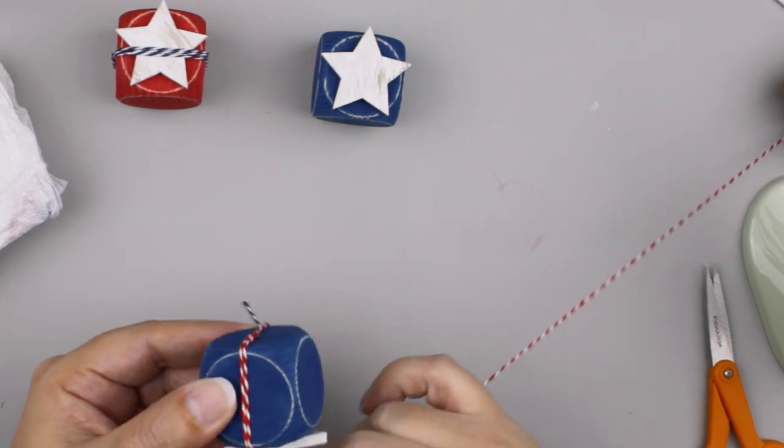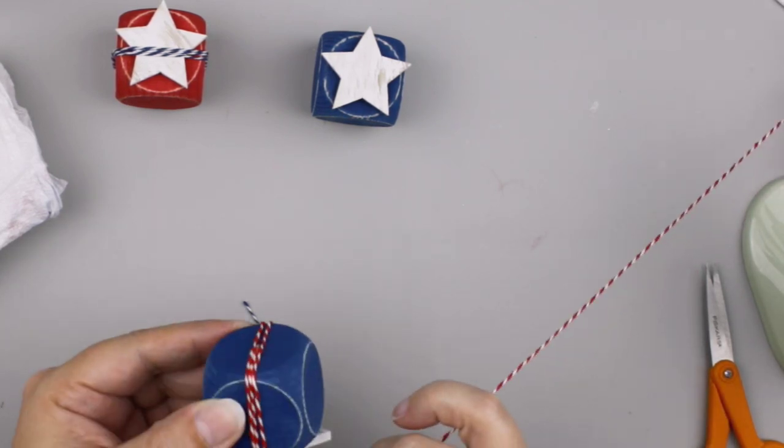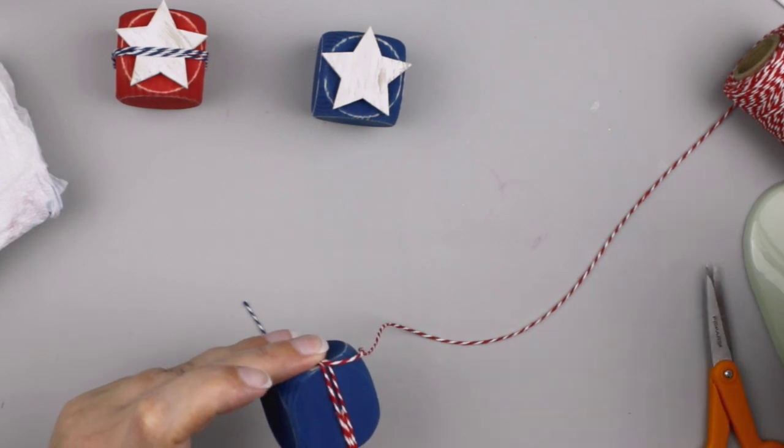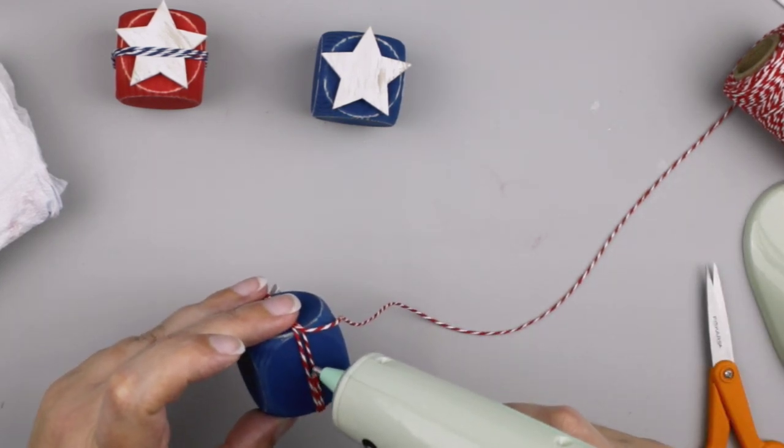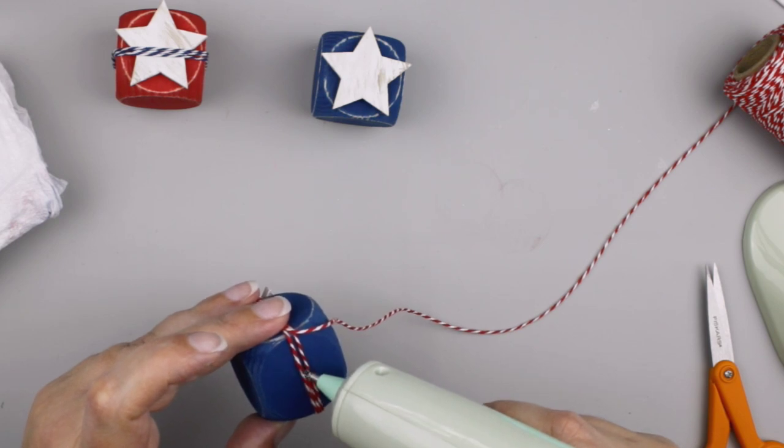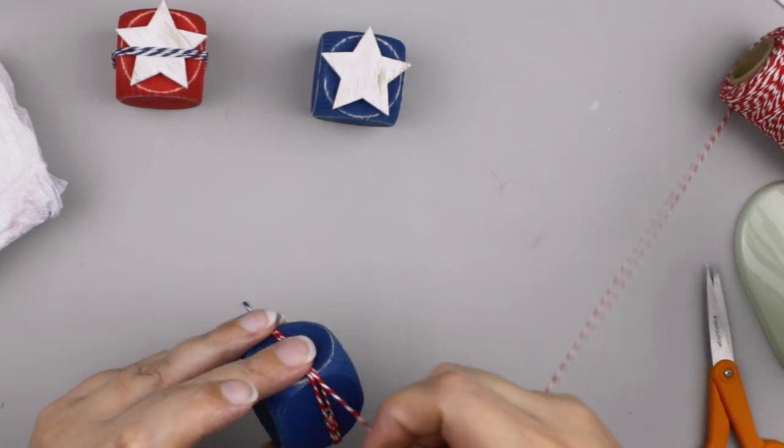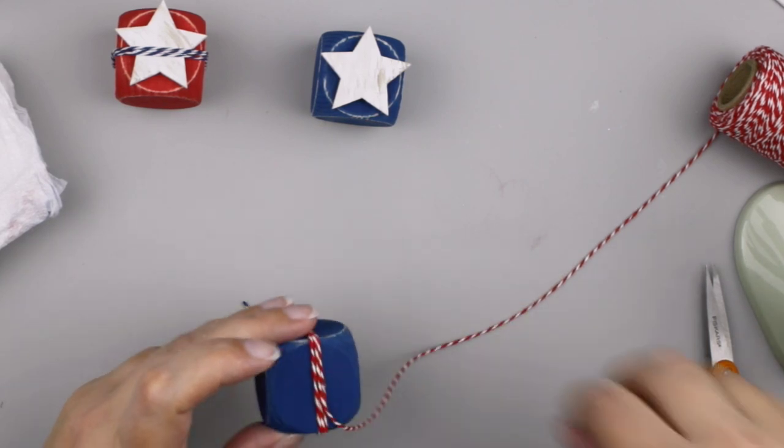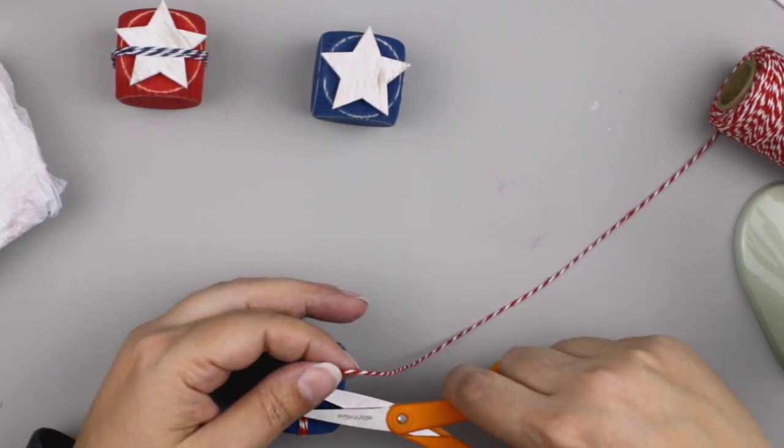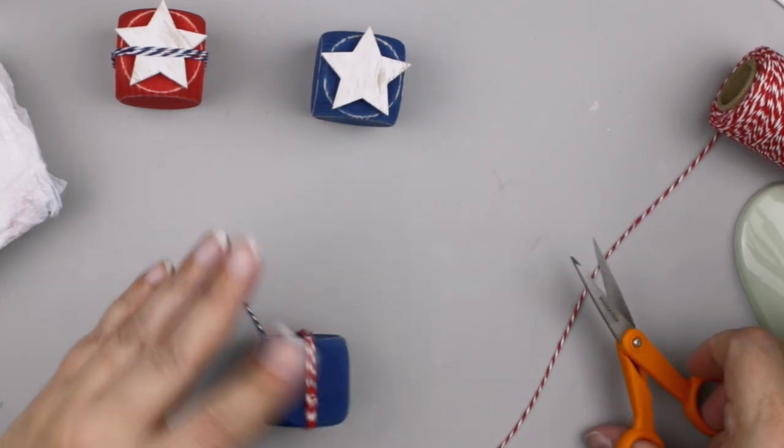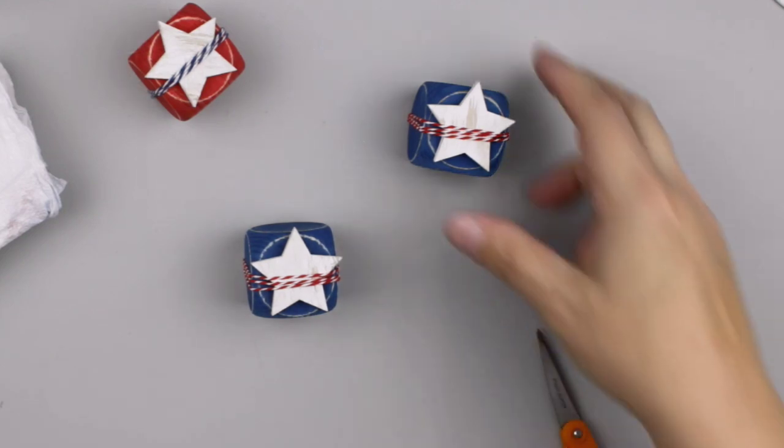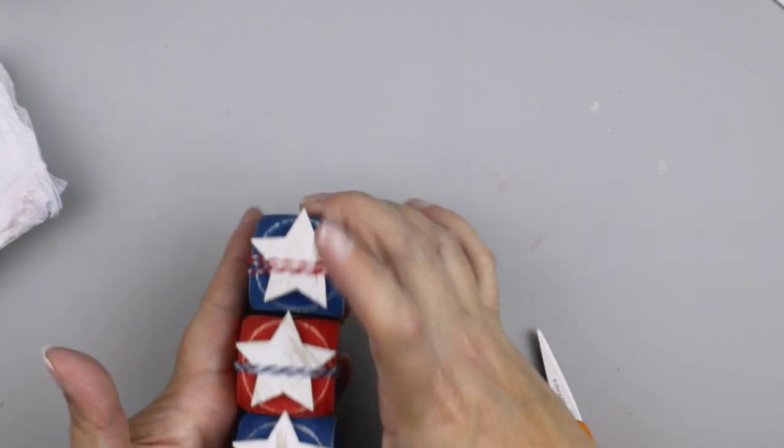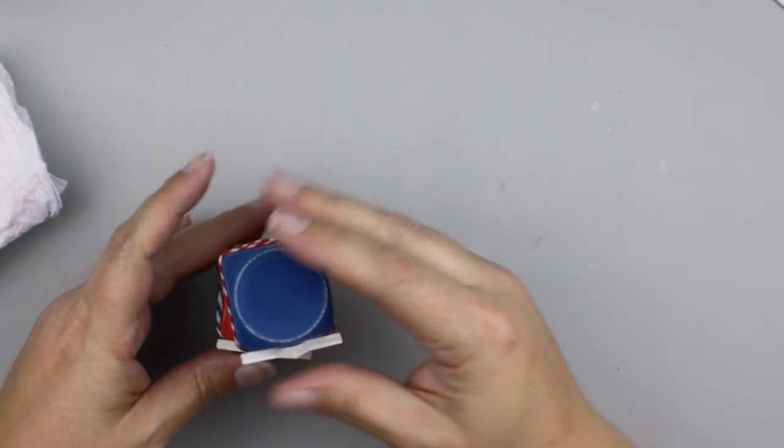Now if you don't have these smaller stars in your stash you can always order them online probably from Amazon or my favorite place to order wood products right now is 24 hour crafts. You can get them in any size, they offer multiple different sizes that you can order them in and you can purchase them there. So for the blue blocks I'm using some red and white baker's twine from the Dollar Tree to wrap around the middle and then on the red block I used a little bit of blue and white baker's twine to wrap around that one and that finishes this project.